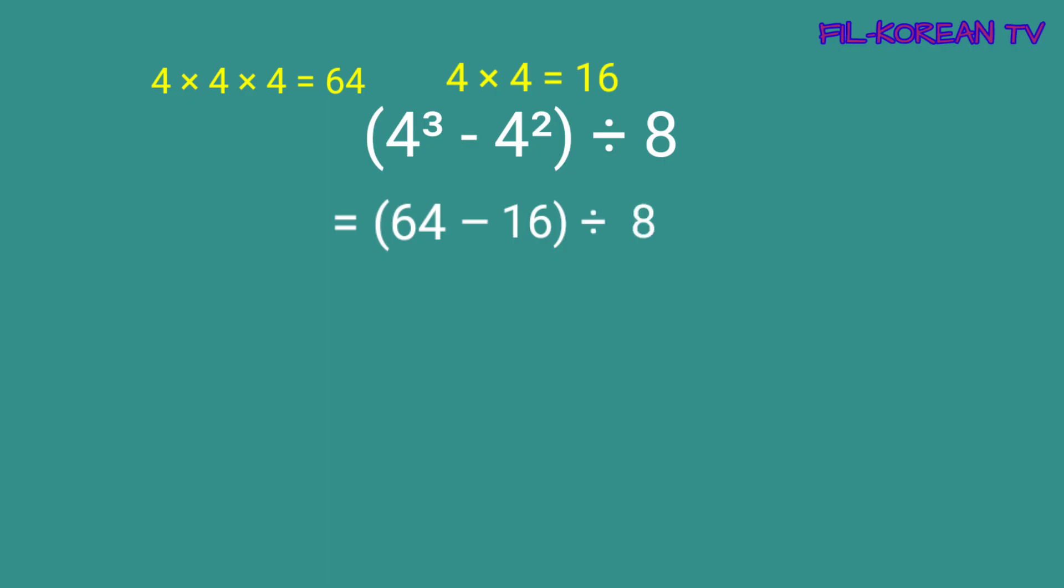Okay, tapos na natin isimplify yung exponential notation. Ngayon, i-perform na natin ang operation na nasa loob ng parentesis. 64 minus 16 equals 48. And last, i-divide na natin itong 48 divided by 8. 48 divided by 8 equals 6. So, the answer is 6.